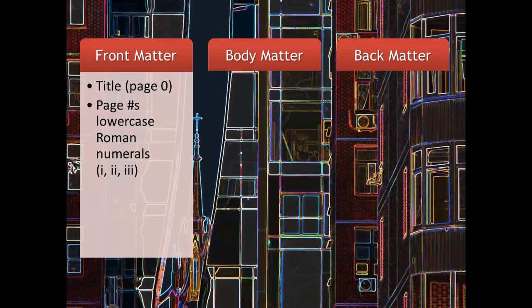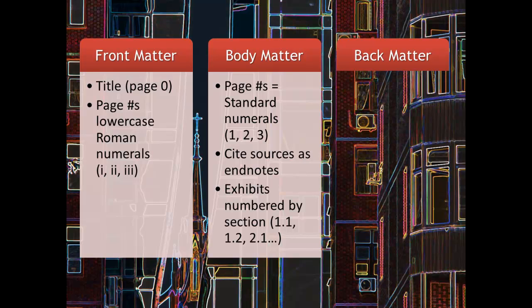The rest of the front matter, starting with the table of contents, is going to have page numbers, and they're going to be lowercase roman numerals. Starting in our main report, we're going to switch over to standard numerals — 1, 2, 3, etc. — and we're going to restart numbering at 1. So even if there were 10 pages in the front matter, the body matter would not start at page 11; it would restart at page 1.